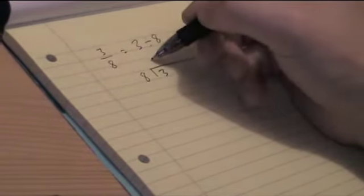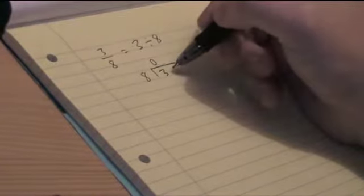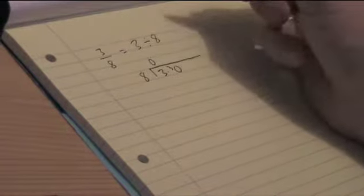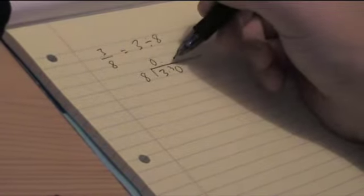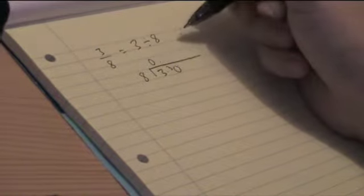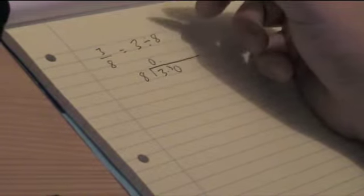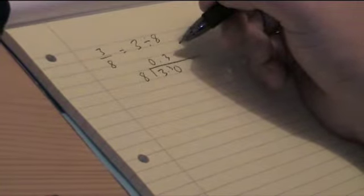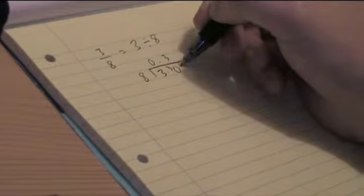First off, how many 8's go into 3? That's none, and I have a remainder of 3. So I carry my 3 into the next column, put a 0 down. So now I'm looking at having 30 tenths. So how many 8's go into 30? Well that's 3, because 3 8's is 24. And I have a remainder of 6.